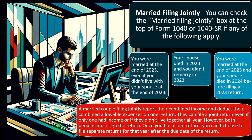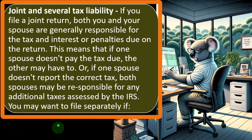Once you file a joint return, you can't choose to file separate returns for that year after the due date. Joint and several tax liability means that if you file a joint return, both you and your spouse are generally responsible for any tax, interest, or penalties due. It's similar to a partnership: a partner can make decisions that hold you liable. Getting married creates that kind of joint legal responsibility.